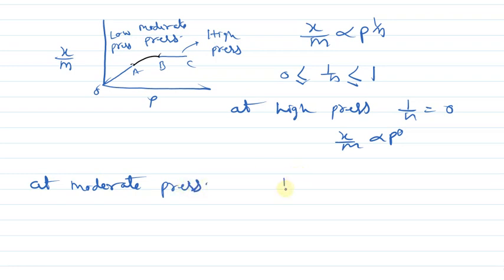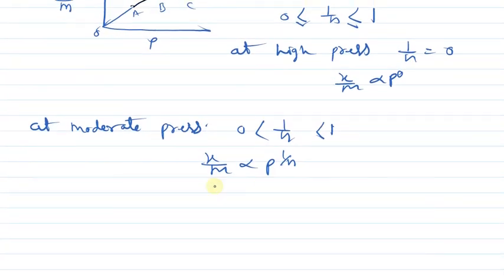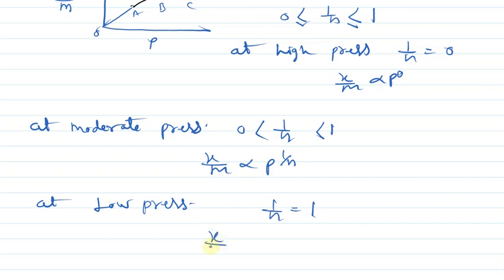At moderate pressure zone, the value of 1/n lies between 0 and 1. At low pressure zone, the value of 1/n is 1, meaning x/m is proportional to P, which is a directly proportional linear relationship. This is the linear part of the graph.